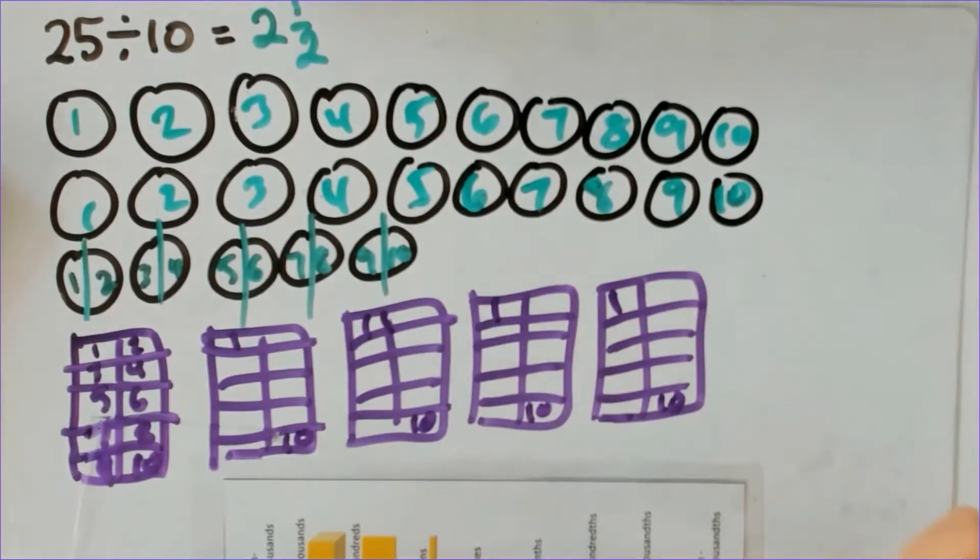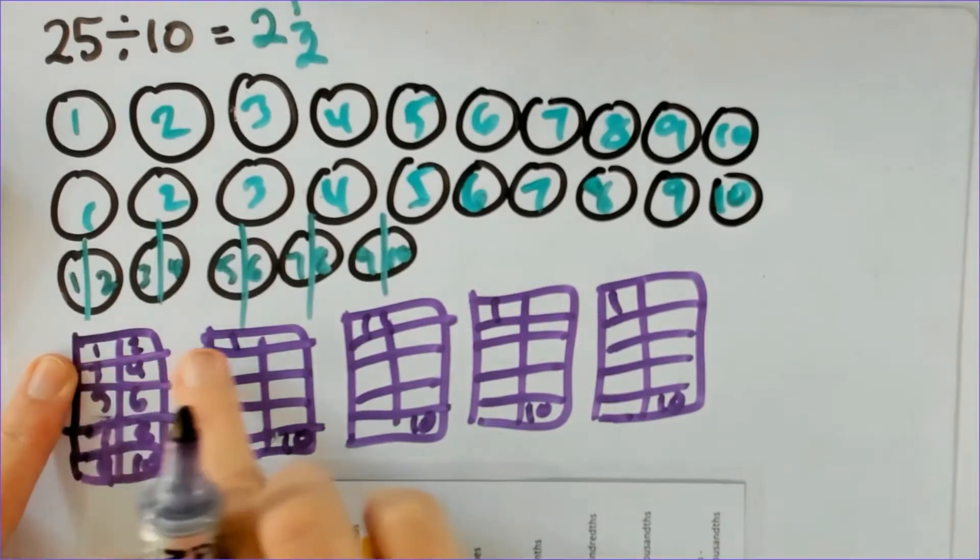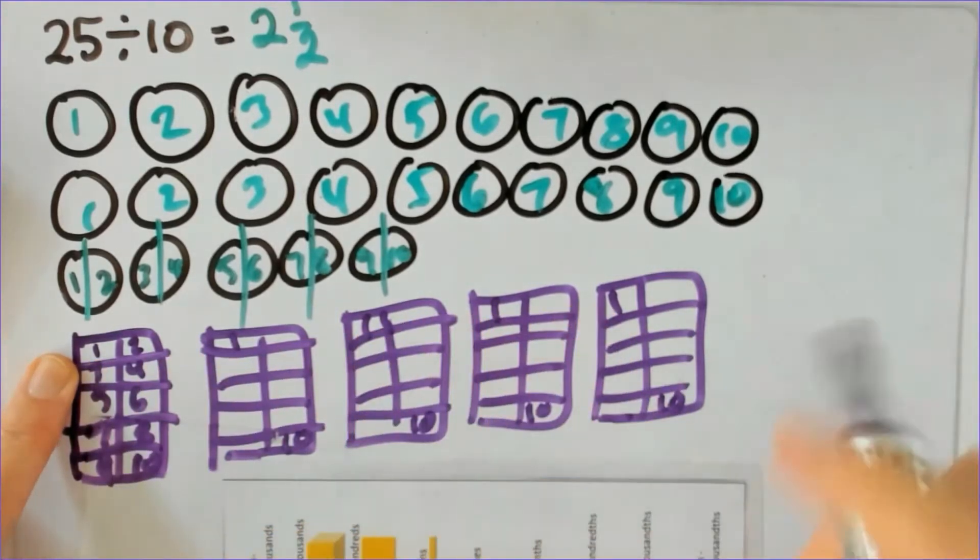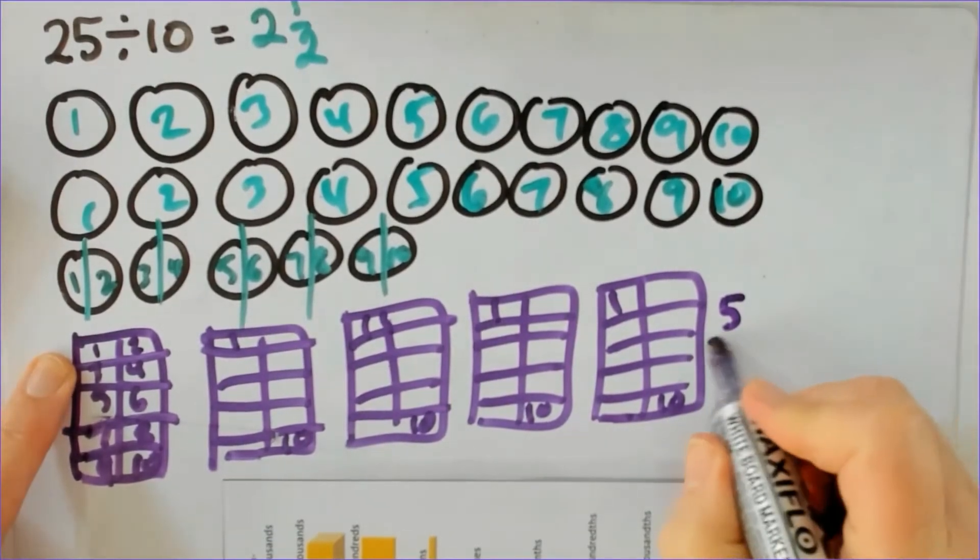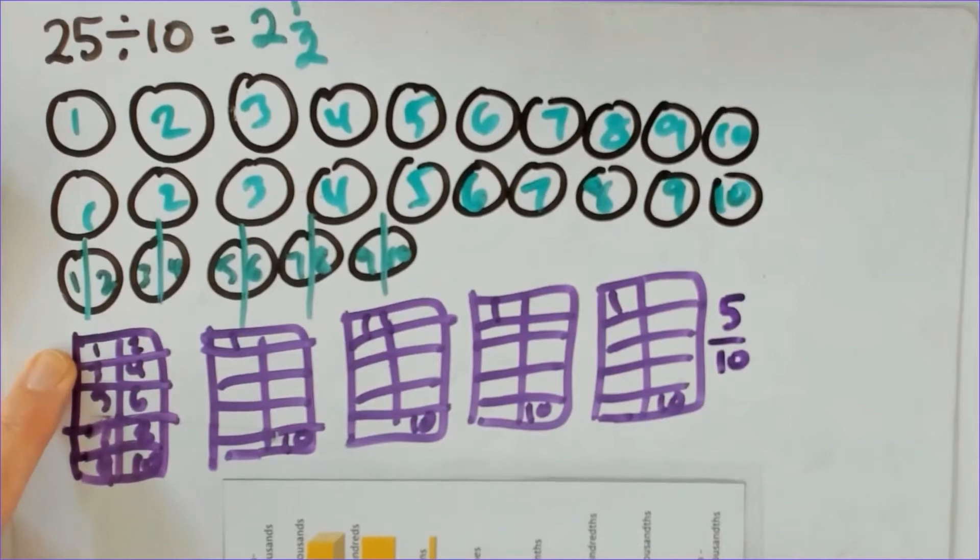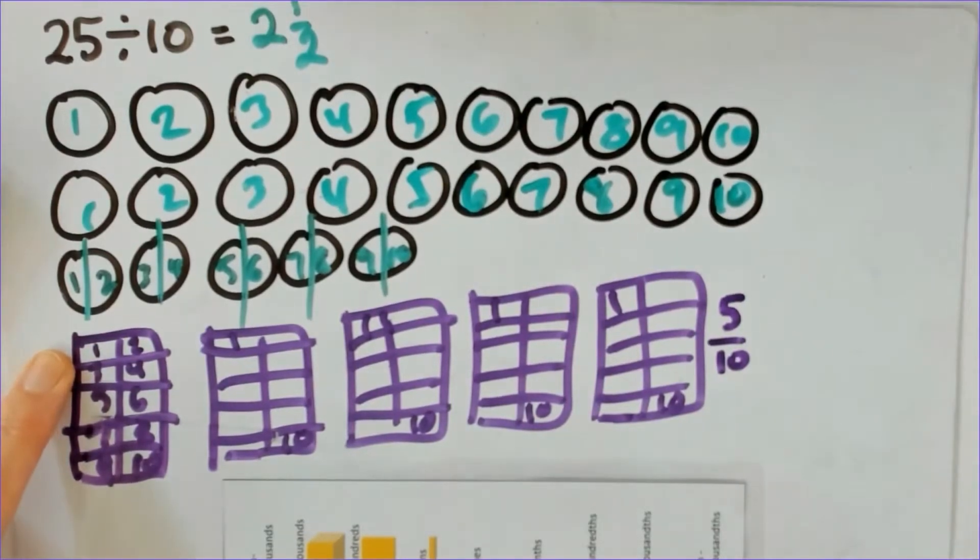Then we have a discussion on how many pieces of pizza does person one get, person two get and so on, and what size is this piece, these pieces of pizza. So you can see that person one gets one two three four five pieces of pizza and they are of size a tenth.